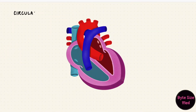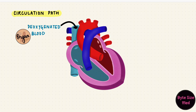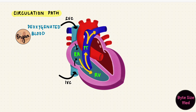First, let's look at the path that blood takes through the heart. Deoxygenated blood, which is used blood from the whole body, reaches the right heart through the superior and inferior vena cava. They open into the right atrium. That blood then moves into the right ventricle. The right ventricle pumps it out through the pulmonary trunk, which divides into the right and left pulmonary arteries, going to the right and left lungs.